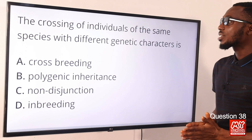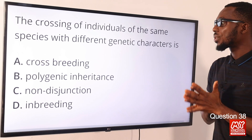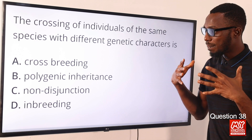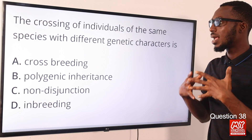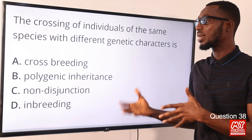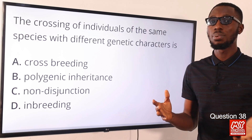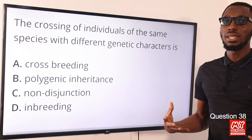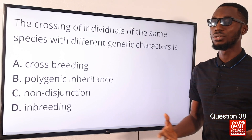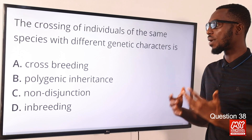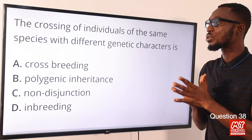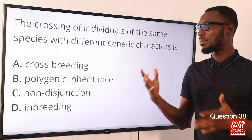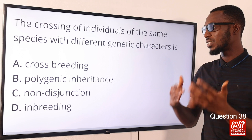Question 38. The crossing of individuals of the same species with different genetic characters is crossbreeding. You are looking at hybrid vigour — you want to get a particular trait that has more advantages compared to the normal trait. Probably you need something more disease-resistant or with better meat production. This is where crossbreeding comes in — you are looking for a particular trait you want to introduce, within the same species but with a distinct genetic makeup.